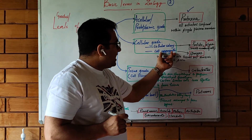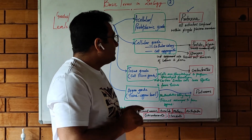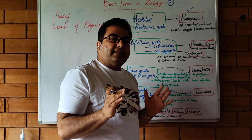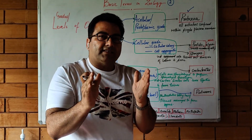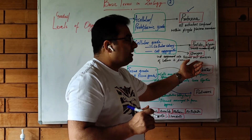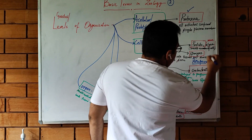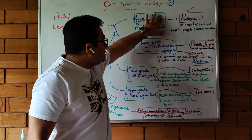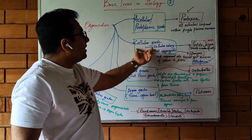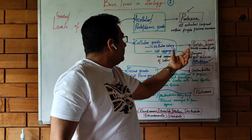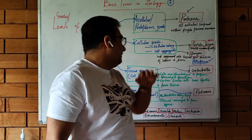Within the cellular grade, we also have the cell aggregate plan, seen in sponges. Although cells are not advanced enough to form tissues, different kinds of cells perform different functions — this is the division of labor. This is seen in Porifera, or sponges. So the cellular colony grade is seen in protists and algae, while the cell aggregate subtype is seen in Porifera.